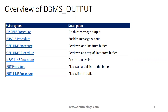NEW_LINE simply creates a new empty line. PUT outputs the log message that a developer has written without appending a new line. PUT_LINE takes the string content you provide and appends a new line at the end — that's the difference between PUT and PUT_LINE. Either way we can use them; it all depends on our requirement.